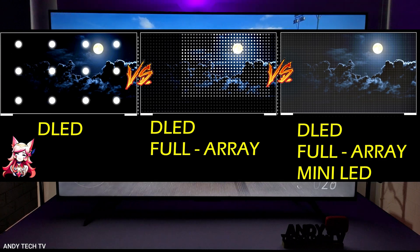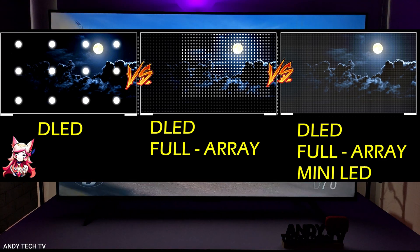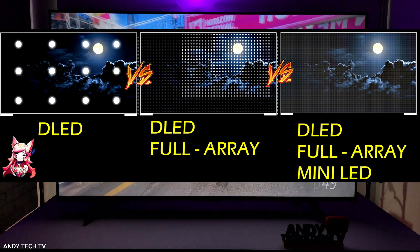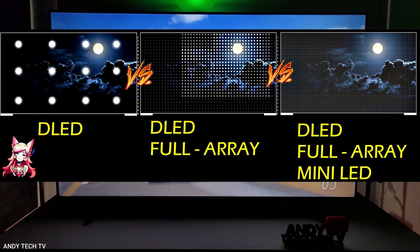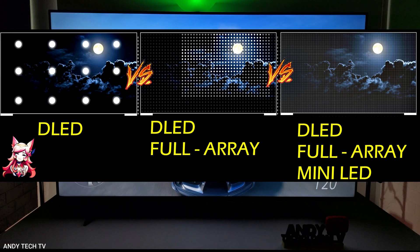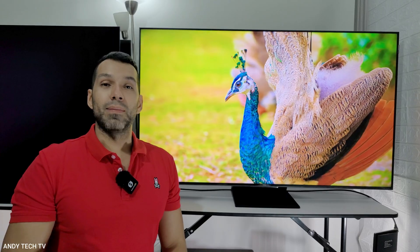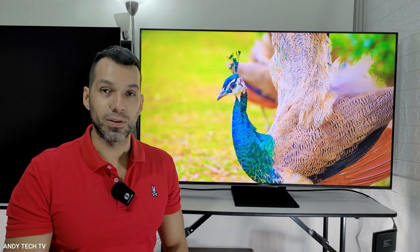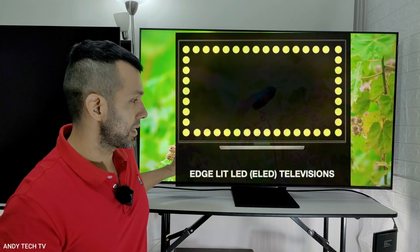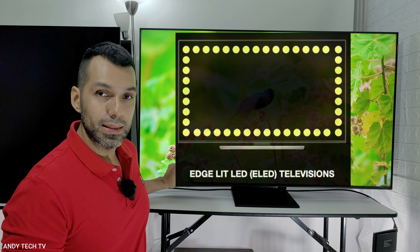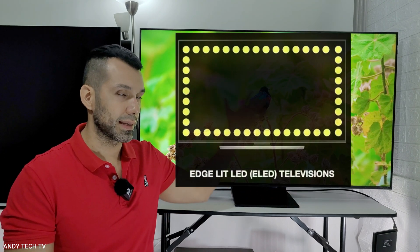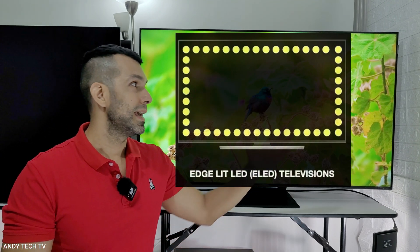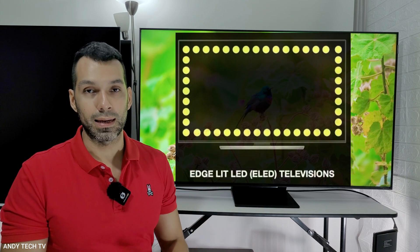So if on your television you find only the term DLED without anything else, then it is most likely that it will have a basic direct LED backlight technology without local dimming. There is also the edge LED backlight technology, which is usually located only in the lower part of the screen, in some cases also in the upper part, and in other cases also on the sides of the TV screen.